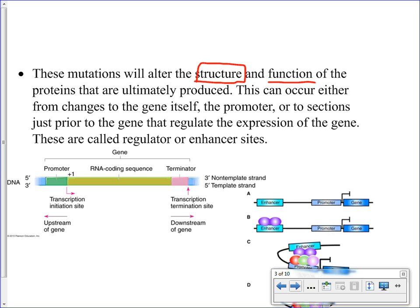Changes to the DNA can affect the function of the protein. This will occur if there is a mutation within the coding region — the transcription unit, or what we usually call the gene, that codes for a specific protein. If there is a change within that gene, that can change the structure and ultimately the function of the protein. There are also other regions associated with the gene that deal with when and how to read that information.